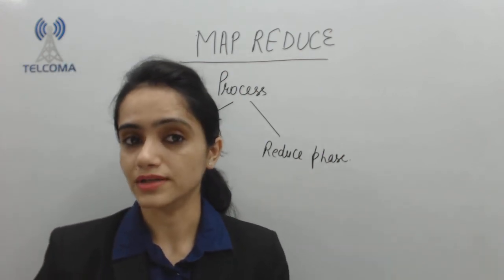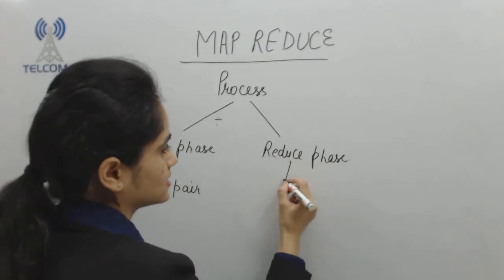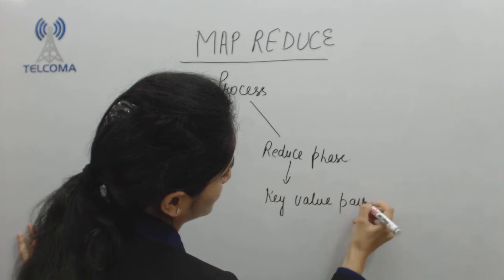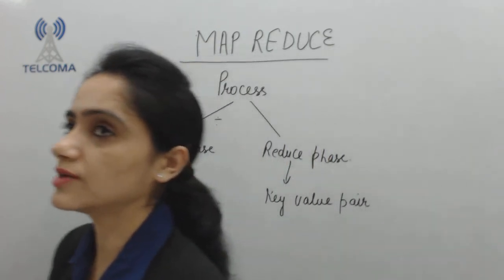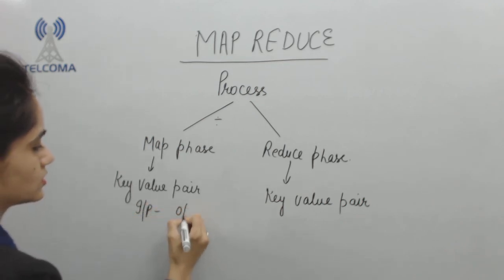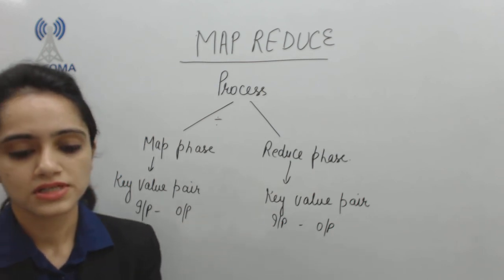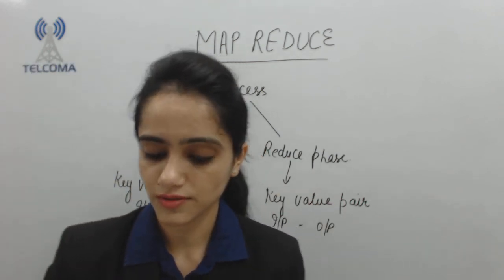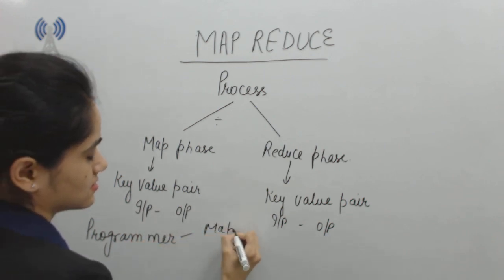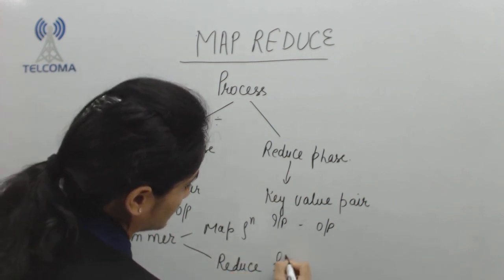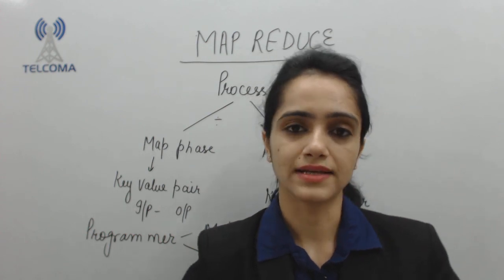Each phase has key-value pairs as input and output. The type of key-value pair is chosen by the programmer. The programmer can define the map function as well as the reduce function. This is about map and reduce, which we require for faster data processing of big data.